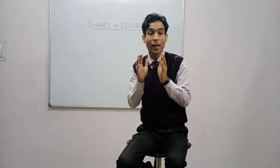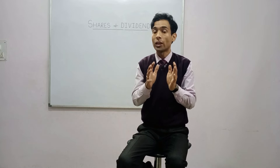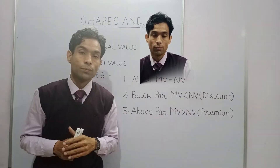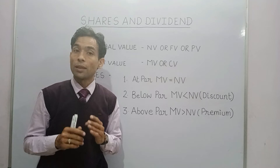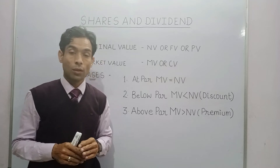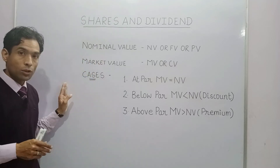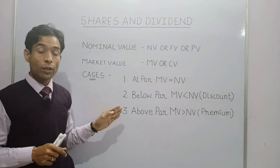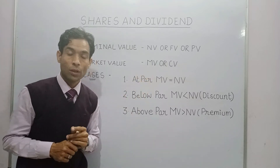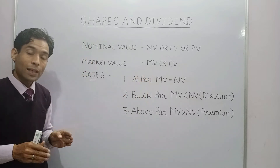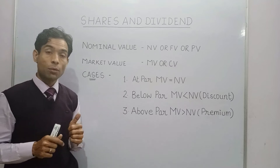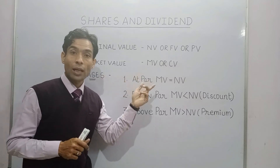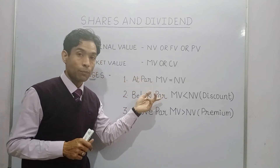The annual profit that the company shares with the shareholders is called annual dividend or annual income of the shareholders. Now let us discuss some related terms. The original price of the share is called nominal value (NV), face value (FV), or printed value (PV). The price at which it is listed in the share market is called market value (MV) or cash value (CV).